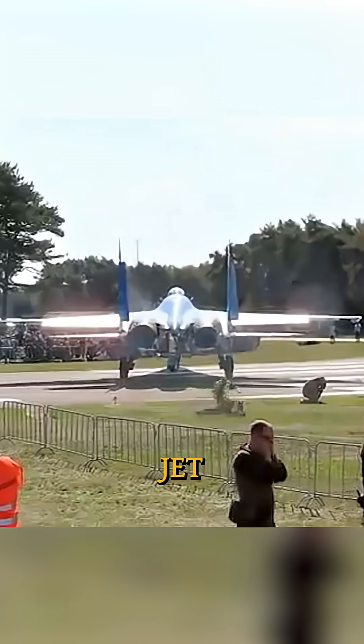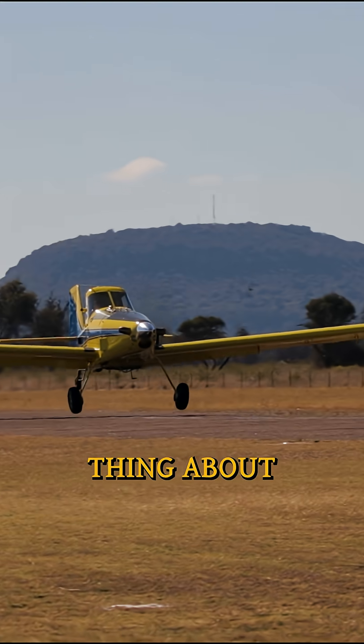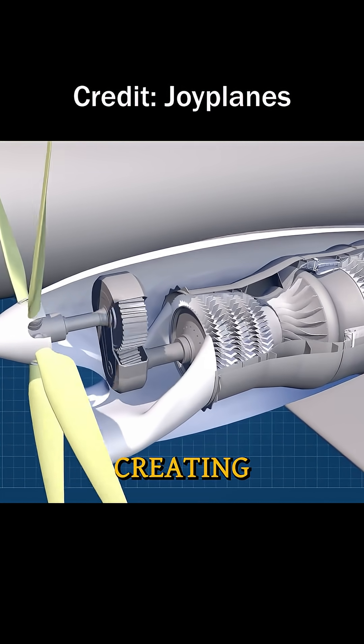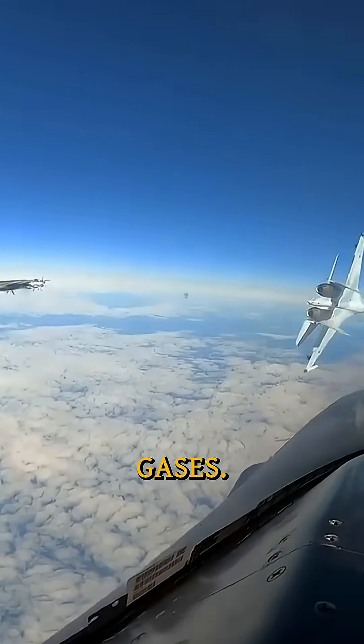Ever wonder why tiny planes don't use jet engines? Here's the thing about turboprops. They're basically jet engines that spin propellers instead of creating thrust with exhaust gases.